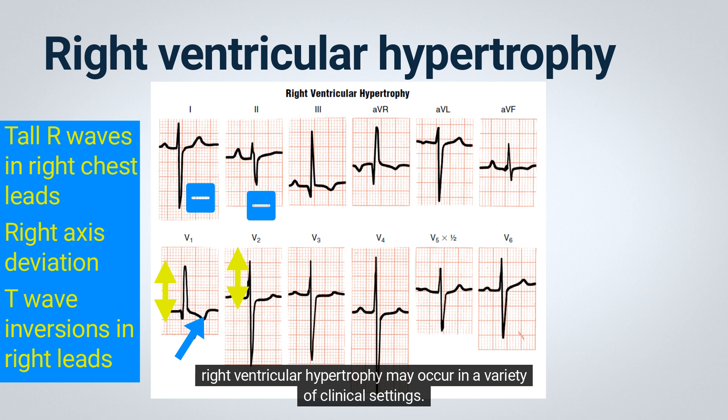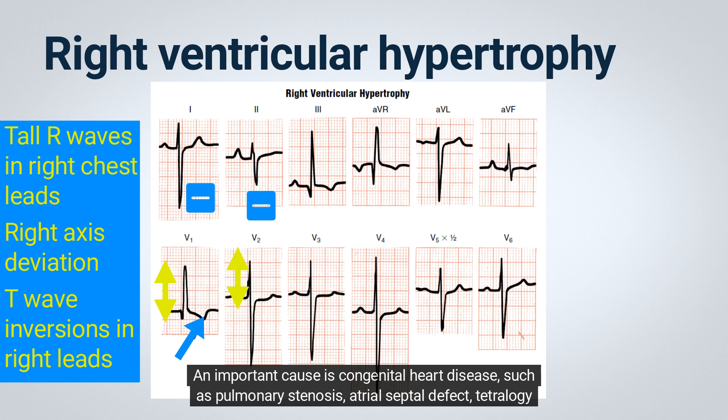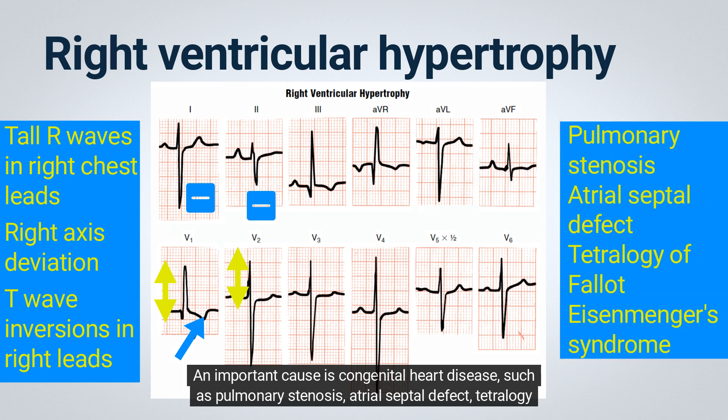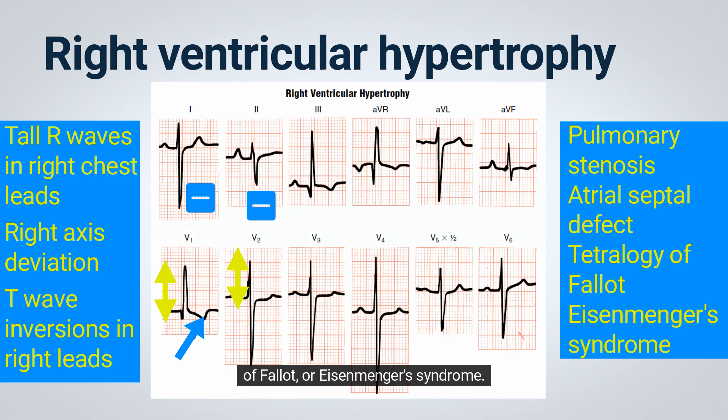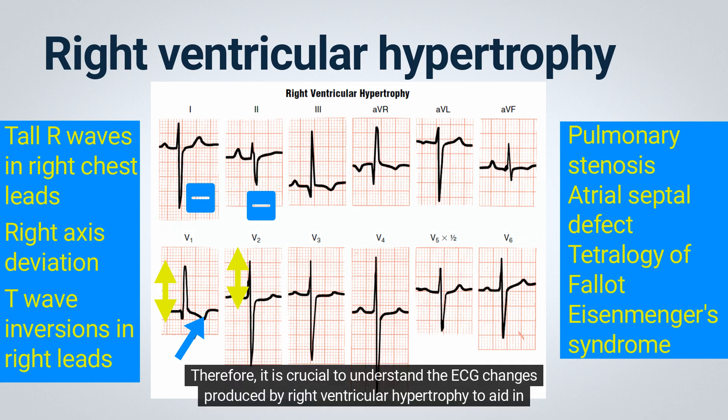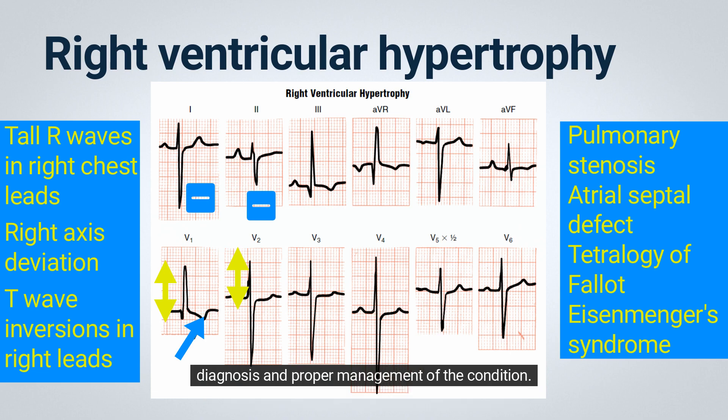Right ventricular hypertrophy may occur in a variety of clinical settings. An important cause is congenital heart disease, such as pulmonary stenosis, atrial septal defect, tetralogy of Fallot, or Eisenmenger's syndrome. Therefore, it is crucial to understand the ECG changes produced by right ventricular hypertrophy to aid in diagnosis and proper management of the condition.